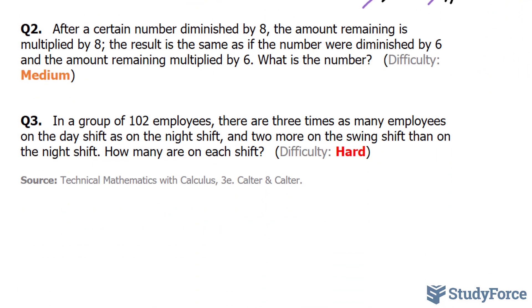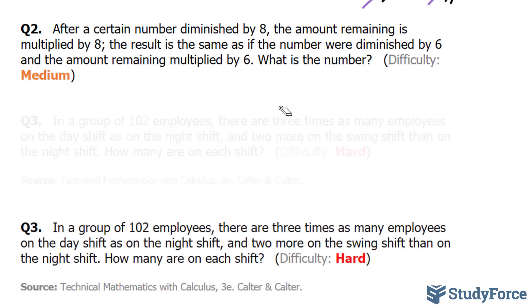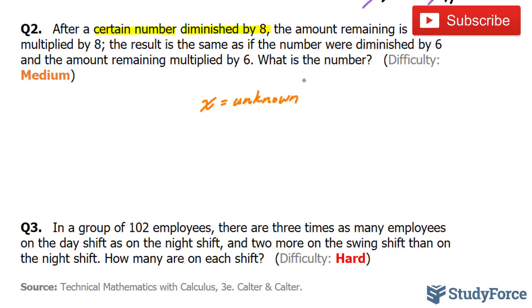Let's move on to question two. In question two, it gets a little more difficult. After a certain number diminished by 8, so let's highlight it as we go. So there's a certain number, and it diminished by 8. And this certain number, we'll define it as x as we did before. That's our unknown. Diminished by 8. That means that this number is being subtracted by 8.